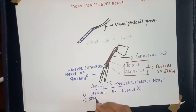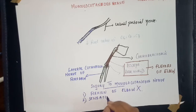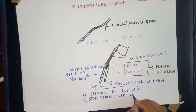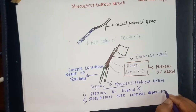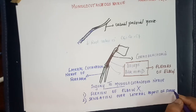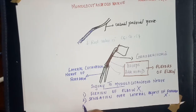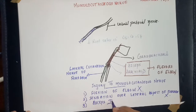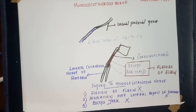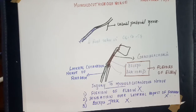Sensation over the lateral aspect of the forearm is lost. The flexion at the elbow is not possible, the sensation over the lateral aspect of the forearm is lost, and the biceps jerk is lost — biceps jerk is absent. These are the features of musculocutaneous nerve injury.